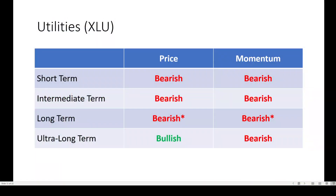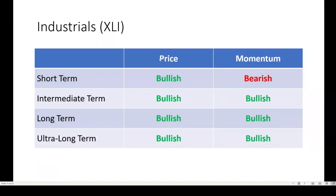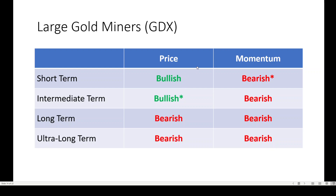How about we move on to the industrials? Of course, industrials are going to mimic your major indices — bullish across the board, no change on anything price or momentum, suggesting that everyone is bulled up on the US economy in a big way.